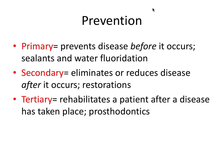There are several different categories of prevention to know for the board exam. Primary prevention prevents disease before it occurs — good examples are sealants and water fluoridation. Secondary prevention eliminates or reduces disease after it occurs, such as amalgam or composite restorations. Tertiary prevention rehabilitates a patient after the disease process has taken place, like dentures after teeth had to be removed because of the extent of disease.